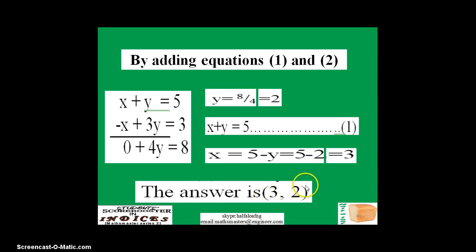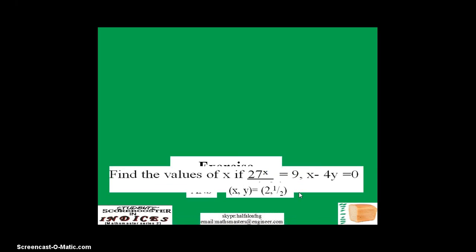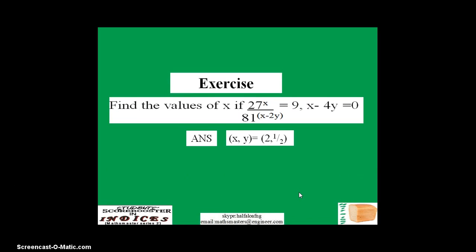Actually, the answer sometimes is arranged in this way, and whenever you see this, it means the first one is x and the second one is y. The reason for this is just arranging alphabets: x comes before y. So this is x and this is y. This is an exercise for you. Just try to solve this. The answer is there, so I wish you good luck.